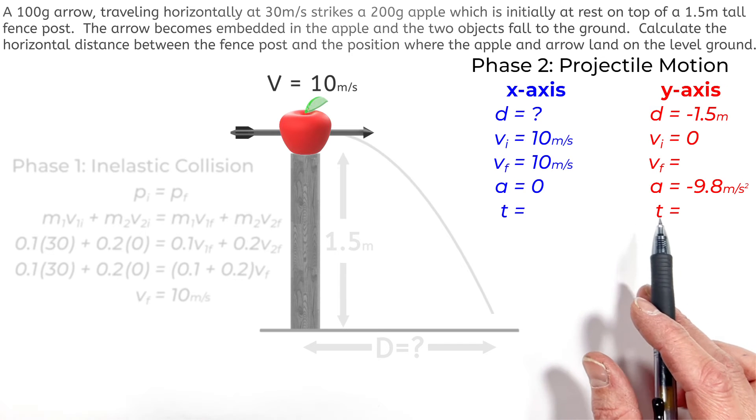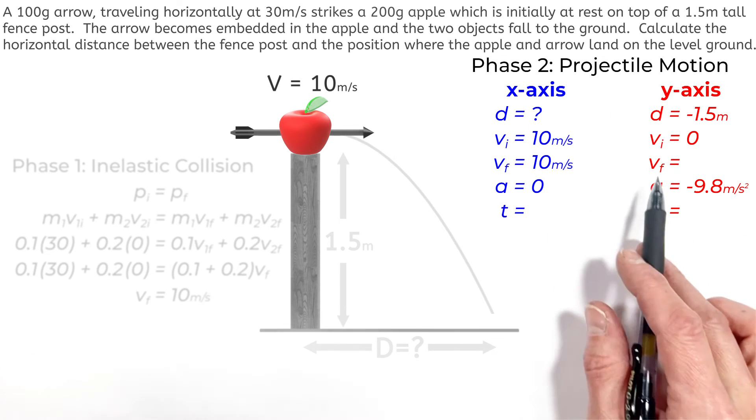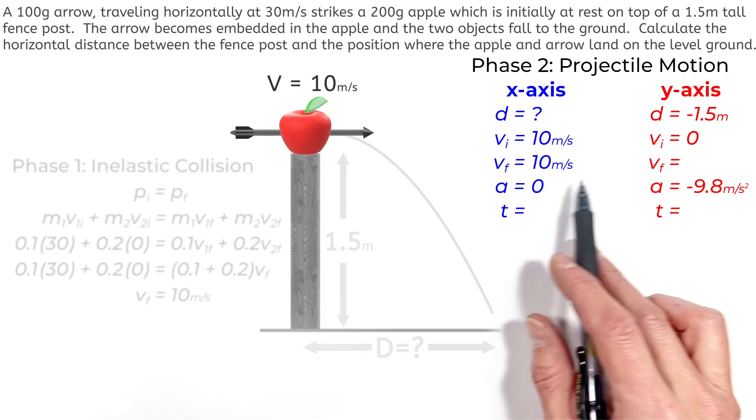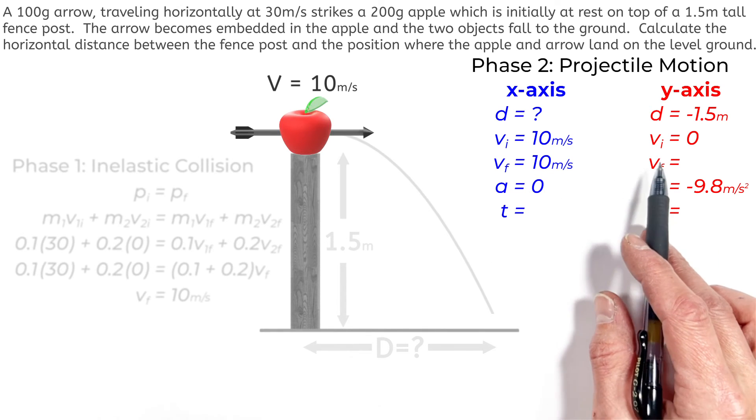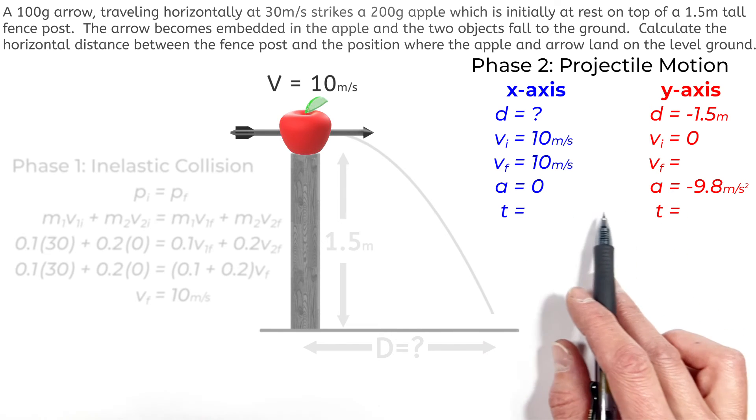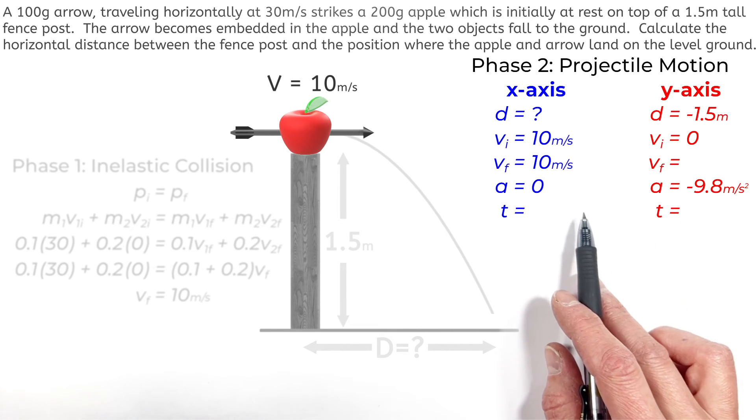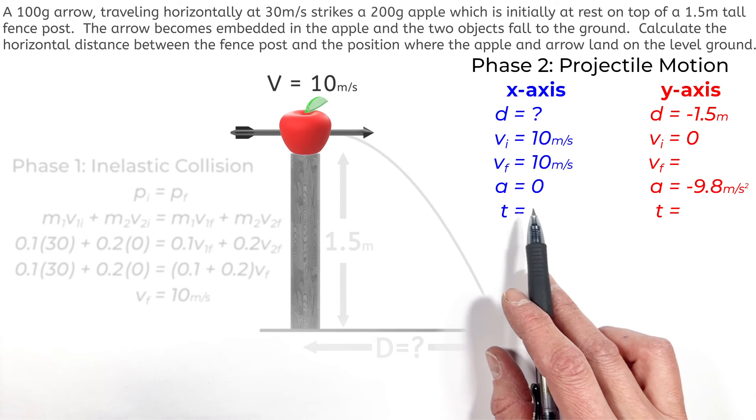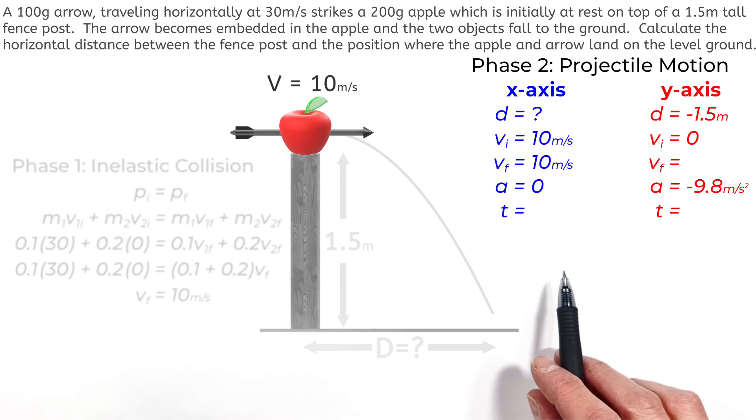Now the key to projectile motion is that any time we know any three of these variables in either of these axes, we can solve for the other two. And the important idea being that two axes only share time. So if we can figure out time in the y-axis, then we'll have enough information in the x-axis to solve for the horizontal displacement.